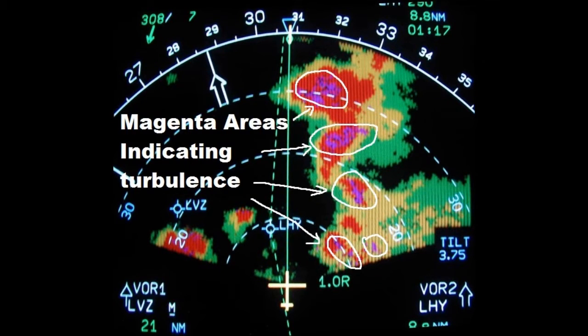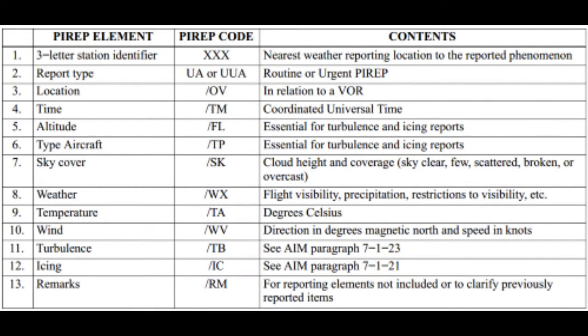Severe turbulence is very rare, but it does happen. That is why it is very important that all of us always wear our seatbelts while seated. There are different ways to predict or anticipate turbulence. We have weather radar in the cockpit, meteorological reports, and pilot reports — if anyone experiences turbulence they report it, and you can read the report to learn that, for example, someone five minutes ahead of you experienced some turbulence so you can prepare your aircraft accordingly.